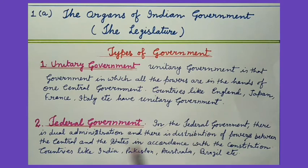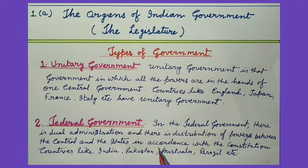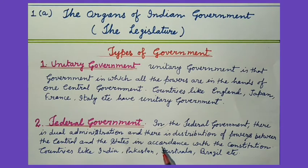There is a distribution of power between the central and state governments in accordance with the constitution. Federal is a mixed or compound mode of government. The federal system divides power between national and local forms of government. India has a federal government because power is shared between the state governments and the central government.